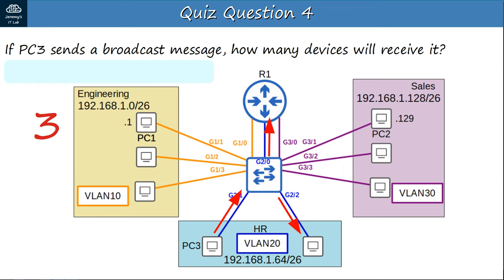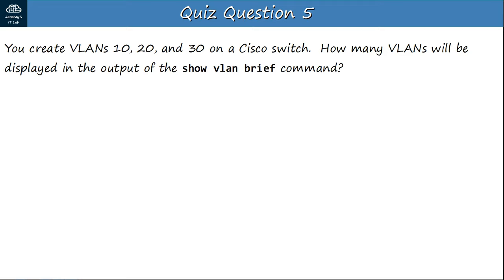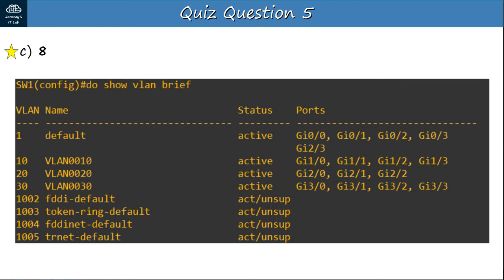Question 5: You create VLANs 10, 20, and 30 on a Cisco switch. How many VLANs will be displayed in the output of the SHOW VLAN BRIEF command? A — 3, B — 5, C — 8, or D — 10? The answer is C, 8. As you can see, there are 8 total VLANs. VLANs 1 and 1002, 1003, 1004, and 1005 exist by default and cannot be deleted. So if you create 3 additional VLANs, there will be a total of 8 VLANs on the switch.